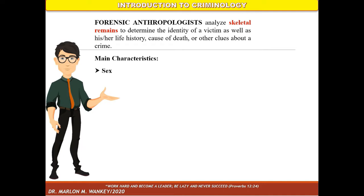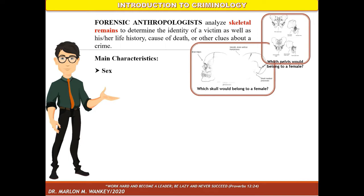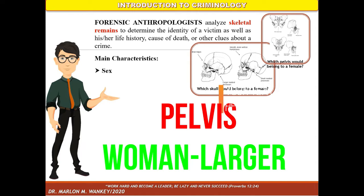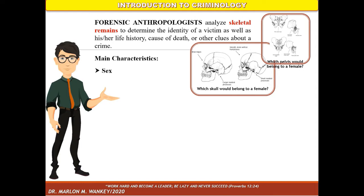The first characteristic is sex. It is determined by examining the skull, pelvis, humerus, and femur. Women give birth, so for this reason the pelvis of a woman is larger than the pelvis of a man. The pelvis of a woman is wide and circular, whereas the pelvis of a man is narrow and heart-shaped.